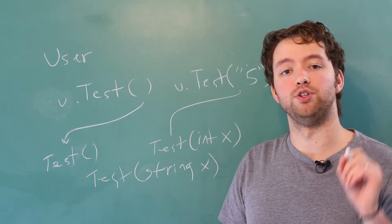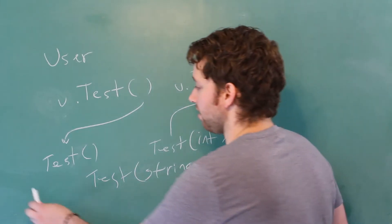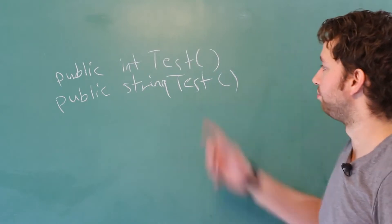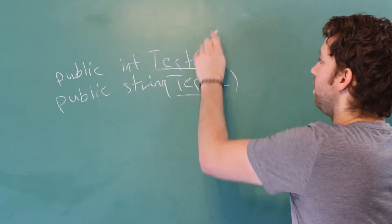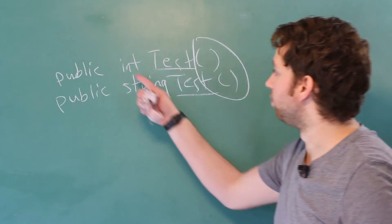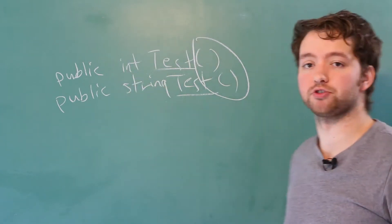The return type though is not part of this. For example, if we have these two methods, they're both called test. They both take no arguments passed in, but one returns an integer and one returns a string.